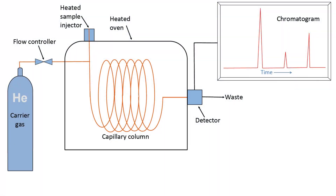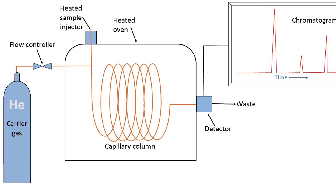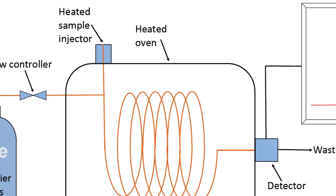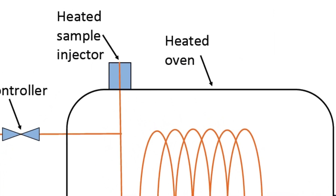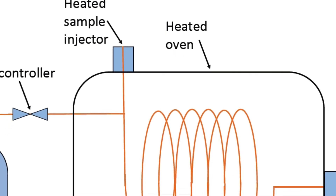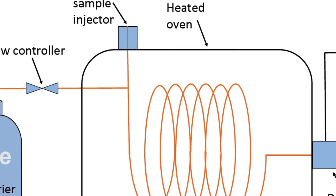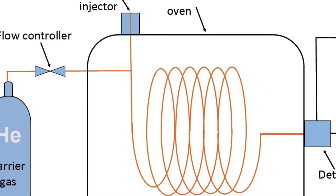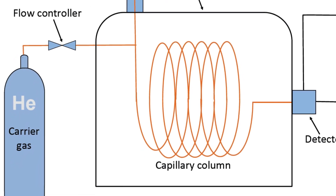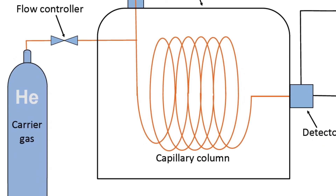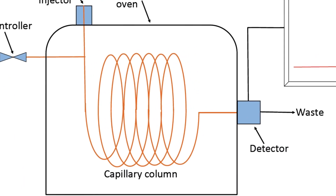By looking at this flow scheme, we can get a pretty good idea of how the components of GLC fit together. A carrier gas is passed through the column — a very common carrier gas is helium. The flow rate of the carrier gas is regulated, and the organic sample is injected onto the column through the injector port at a temperature sufficient to vaporize the sample. The vaporized sample is pushed through the heated column by the carrier gas, and the various components in the sample will travel through the column at different rates, some faster than others. As each component reaches the end of the column, it's sensed by a detector.